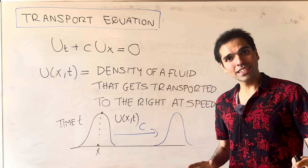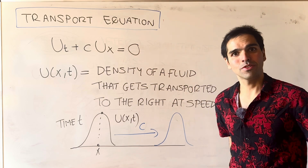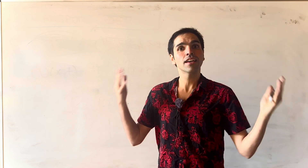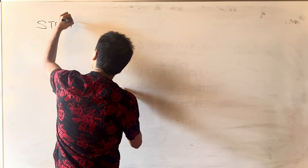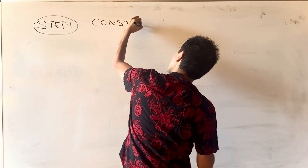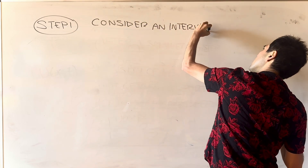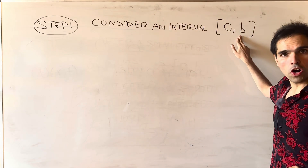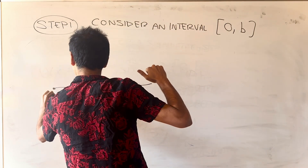What I'm going to do in this video is derive this transport equation from first principles, because all it has to do with is the mass of the fluid itself. Step one: consider an interval zero to b, where b is an arbitrary number, and let's look at the blob from zero to b.